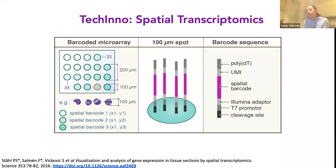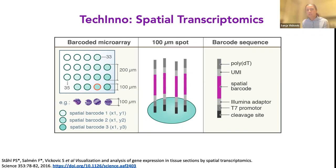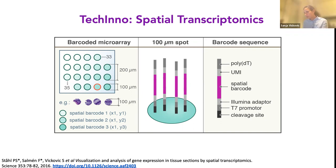Instead of going through the gruesome task of splitting a tissue section into smaller parts, we actually first build a grid — a spatially barcoded microarray, which you see on the left-hand side. Each spot is a different shade of green and denotes, through a DNA barcode, a Cartesian coordinate on a glass slide. The spot in the upper left corner has a certain ATGC sequence that denotes position 1-1, the spot next to it denotes position 1-2, and so on through 1,000 spots. Each spot has millions of copies of the spatial barcode, so you can capture a lot of molecules per spot.